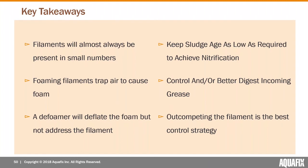Key takeaways: filaments will always be present in small numbers and that's generally not a problem. When filament numbers increase beyond a certain point, they start trapping foam and rising to the surface. Defoamers can work but we want to focus on addressing the underlying issue. Keep a lower sludge age for plants prone to foaming filament issues. Get better at controlling or digesting incoming grease. Out-compete the filaments by tilting the competitive balance back toward your floc formers.